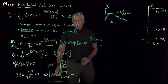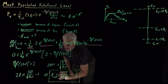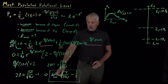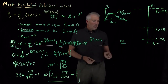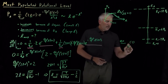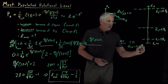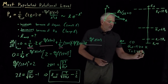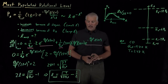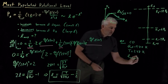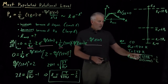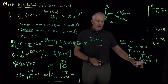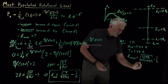That value of L is our L max — the most populated rotational level. Let's work an example. For carbon monoxide, which has a rotational temperature of 2.77 Kelvin, at room temperature of 298 Kelvin, the most populated rotational level is given by the square root of temperature over twice the rotational temperature, minus one half. Plugging in: 298 Kelvin divided by about 5.5 Kelvin, take the square root, subtract one half, and we find it equals approximately 6.8.